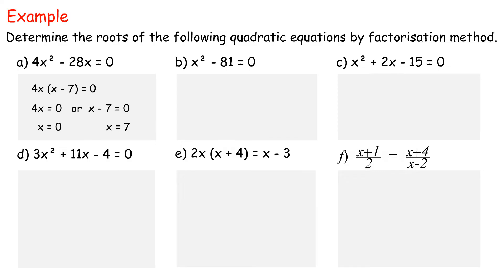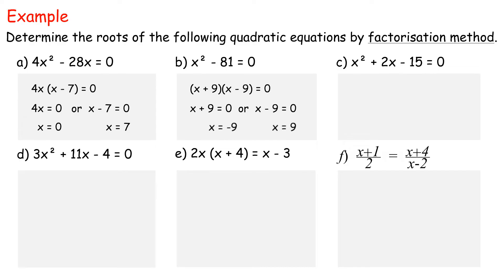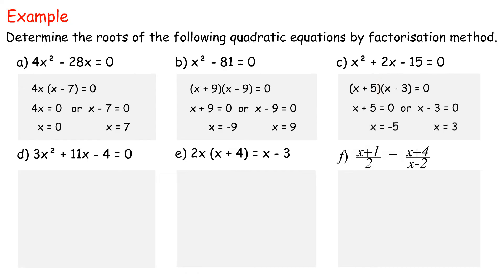In example b: x² minus 81 equals 0. This is an example of factoring difference of two squares. Thus, (x plus 9)(x minus 9) equals 0. x equals negative 9 or x equals 9. Therefore, the roots are negative 9 and 9. In example c: x² plus 2x minus 15 equals 0. This is an example of factoring three terms with leading coefficient of 1. Thus, (x plus 5)(x minus 3) equals 0. x equals negative 5 or x equals 3. Therefore, the roots are negative 5 and 3.